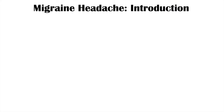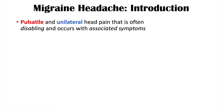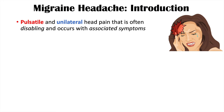First, let's talk about what migraine headaches are. They are pulsatile and often unilateral head pain that is often disabling and occurs with associated symptoms. Unilateral means they usually occur on one side of the head, and pulsatile means they are pounding or throbbing in nature.